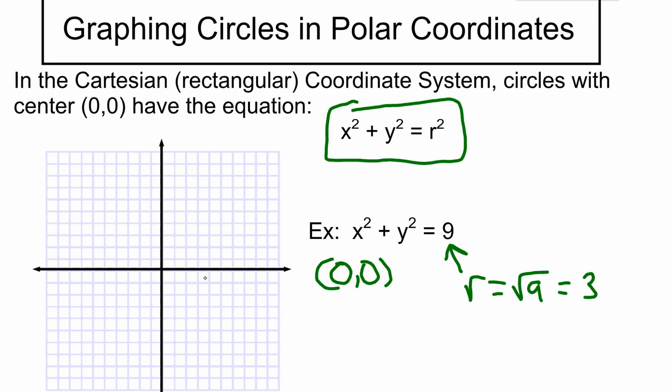We go out 3, up 3, left 3, and down 3, then draw our circle. That's our circle with this equation in the Cartesian coordinate system.